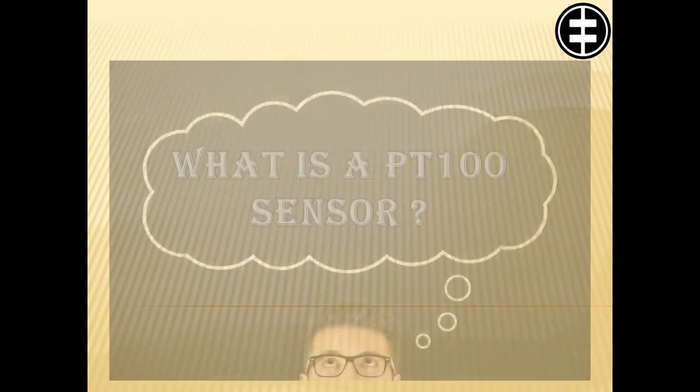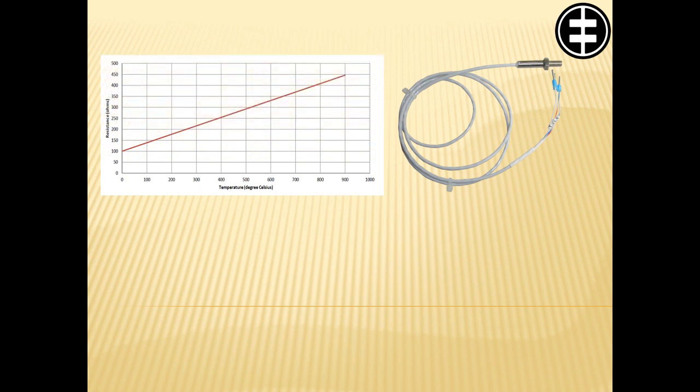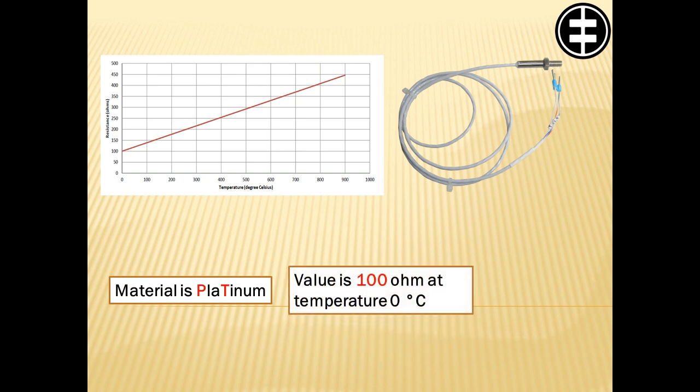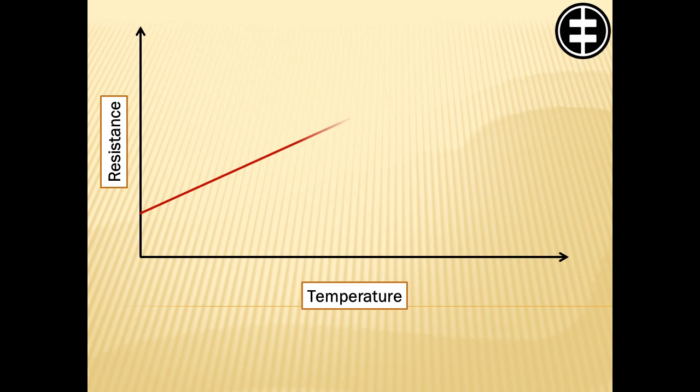What is a PT100 sensor? The PT100 is a sensor based on resistance measurement principle. Material is platinum and resistance value is 100 Ohm at temperature 0 degrees Celsius. Platinum has a positive resistance temperature factor, resistance increases with rising temperature.